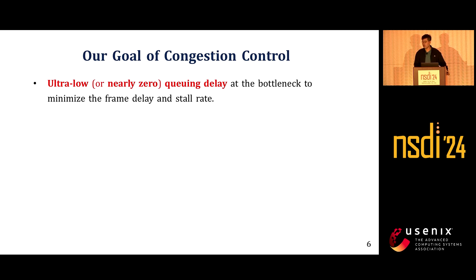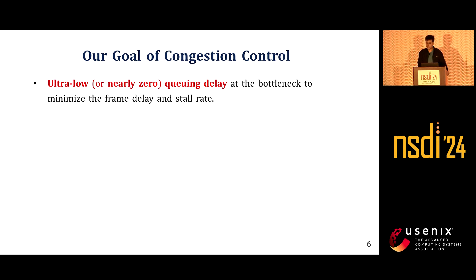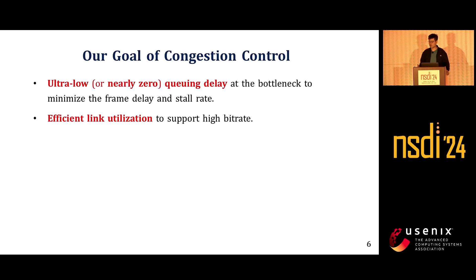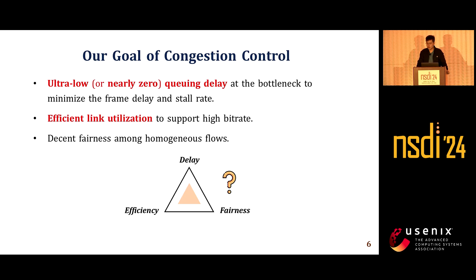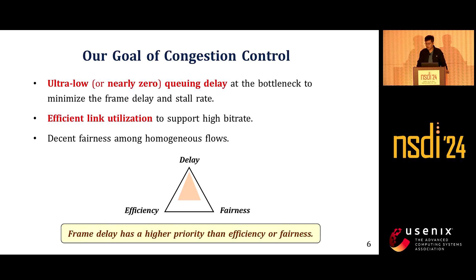Based on our study, we crystallize our CC goals. The first is to achieve ultra-low or nearly zero queuing delay to minimize frame delay and stall ratio. We focus on frame-level queuing delay — zero queuing — meaning the queue induced by a frame should be drained by the time the next frame arrives at the bottleneck. The second goal is to maintain highly efficient link utilization to support high bitrate, and to achieve fair bandwidth allocation across homogeneous flows. The key difference from traditional CC is that for cloud gaming, delay has a higher priority than efficiency or fairness.